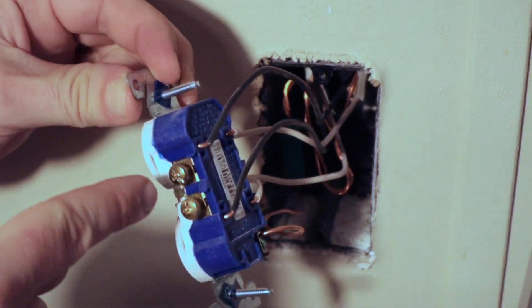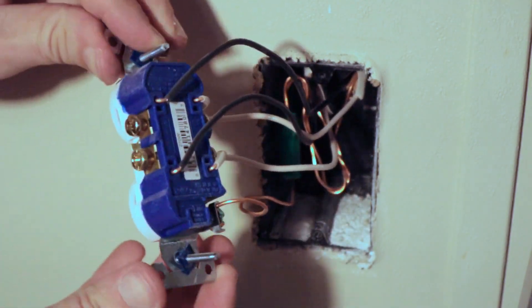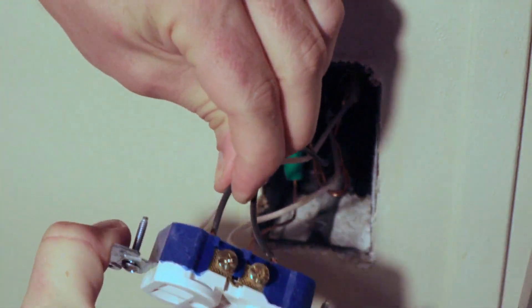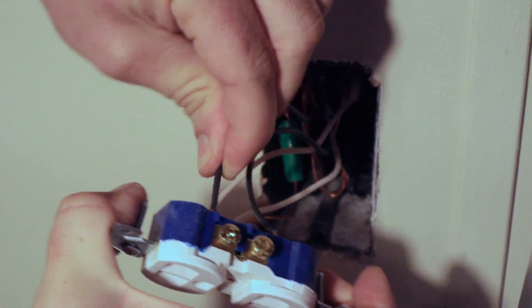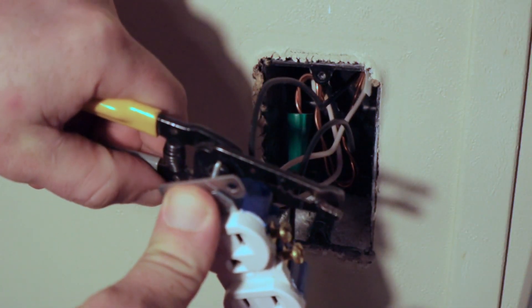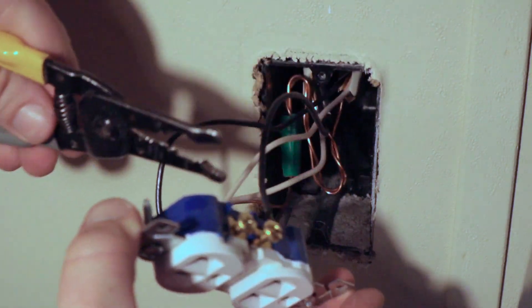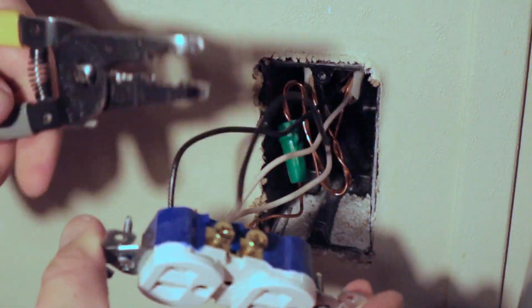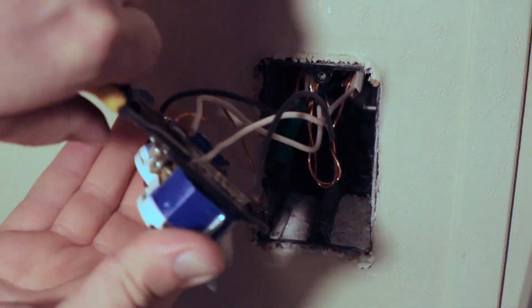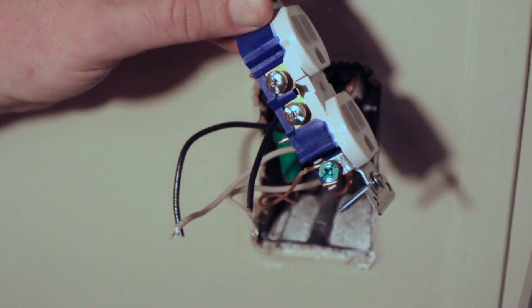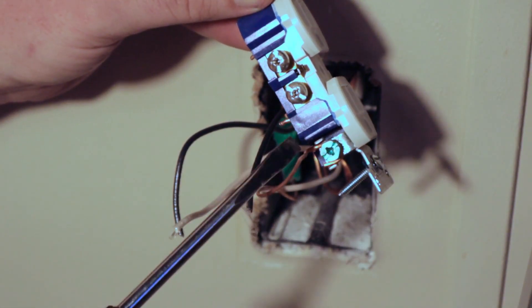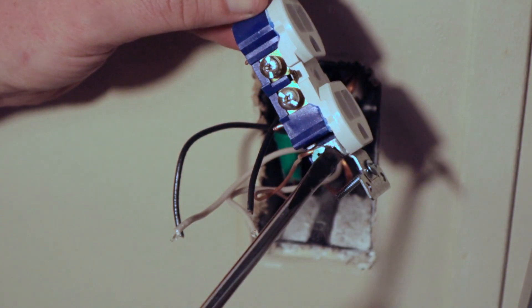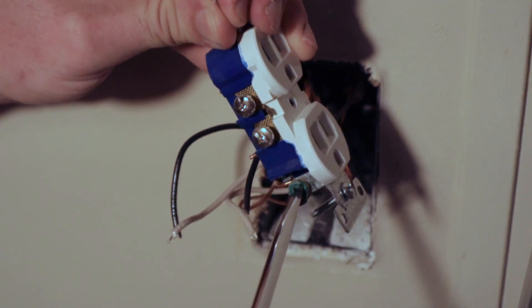The first thing I'll do is remove these black and white and ground wires from the outlet. You can twist them back and forth loose. But I'm just going to cut them with a pair of strippers. My wires are long enough that I'll be able to cut them and still strip them back and fit them on the new device. The grounding wire is held on with a screw and that's one I don't need to cut. So I'll go ahead and loosen that.